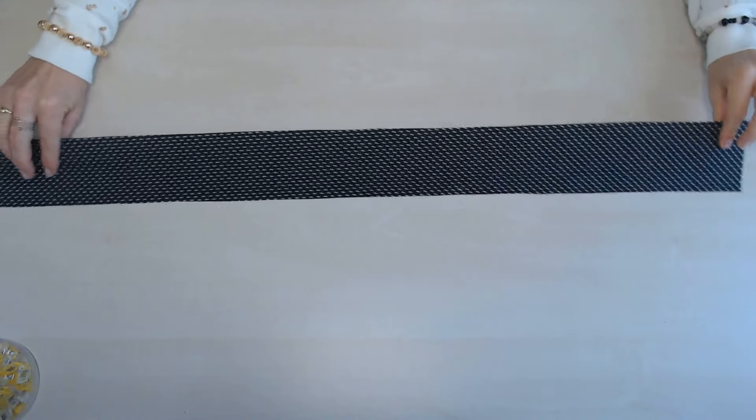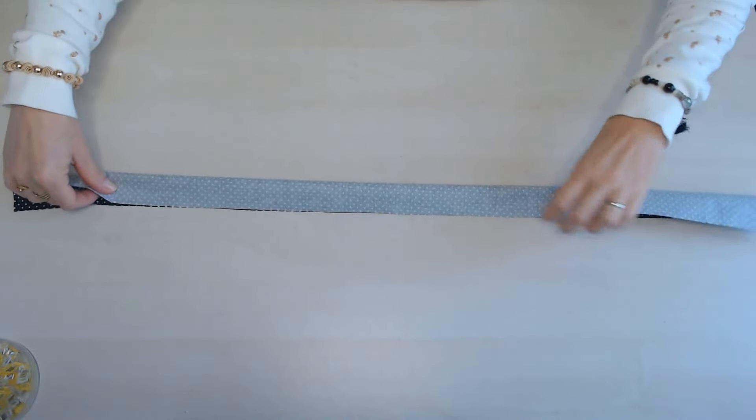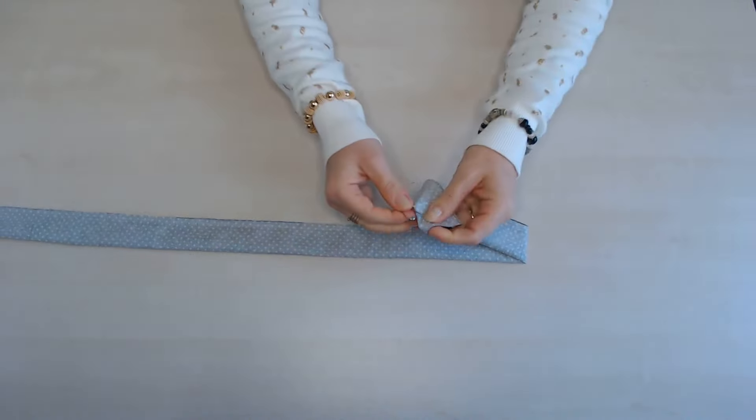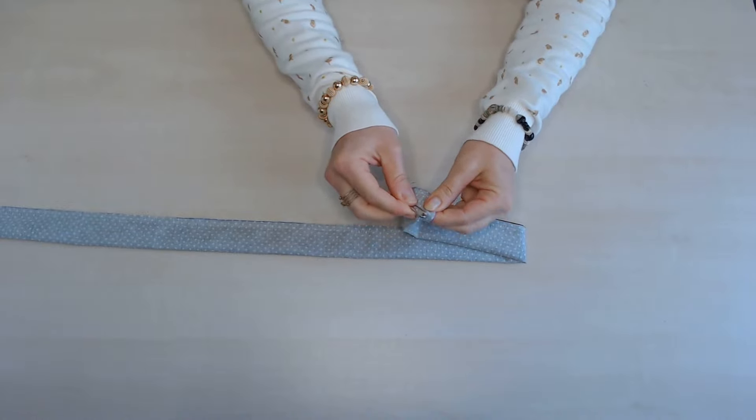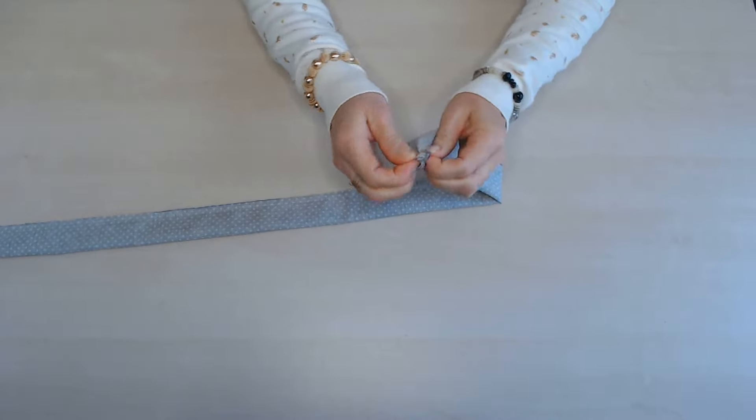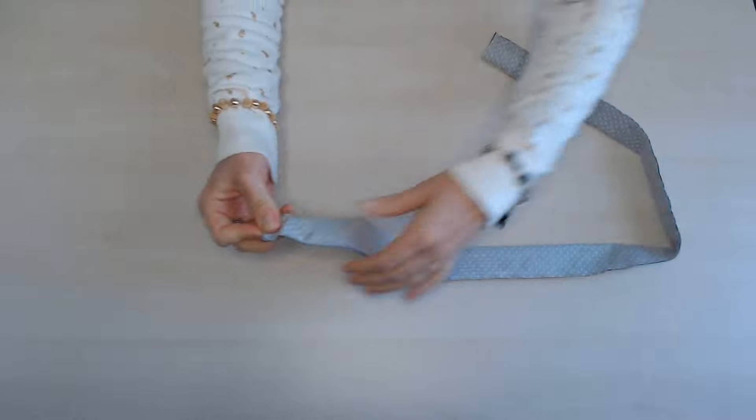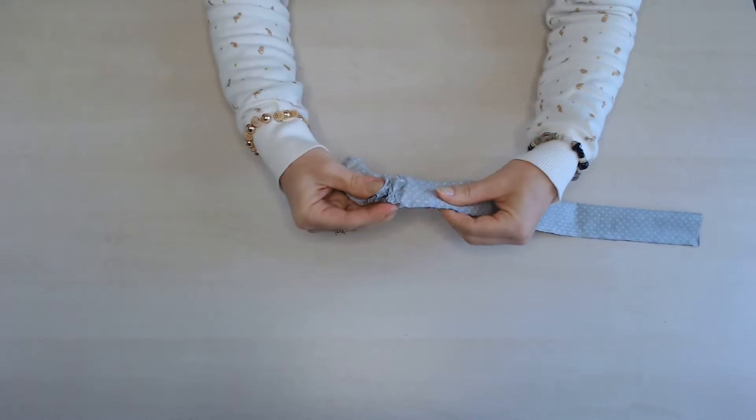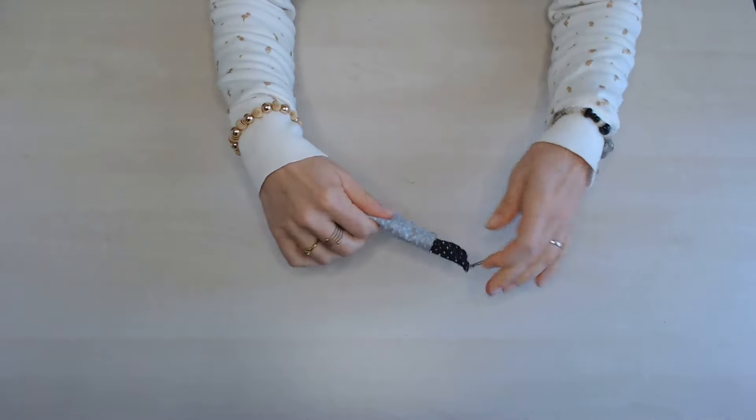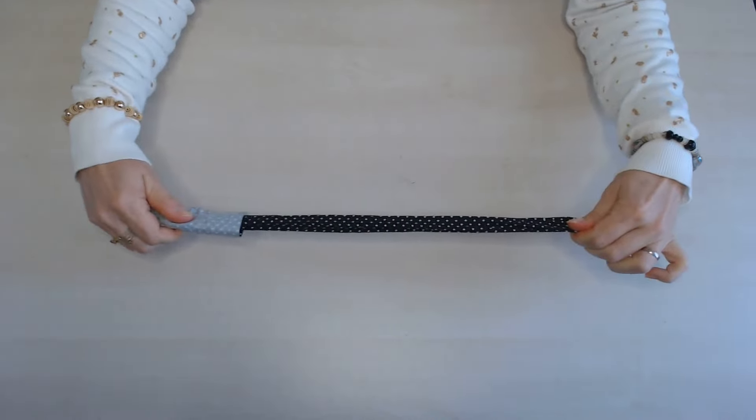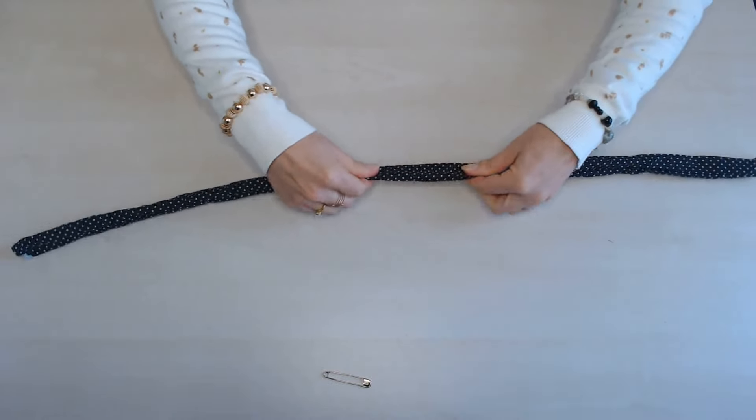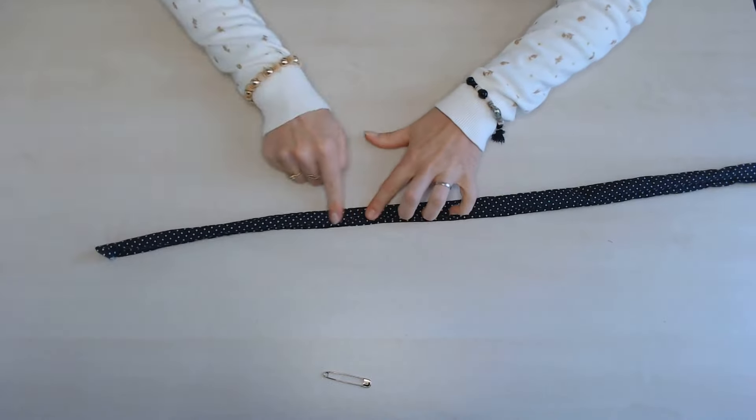Je reprends la bande de 86 cm, je la plie endroit contre endroit et je vais coudre sur toute la longueur à 5 mm du bord. Une fois piqué, on va retourner la bande à l'aide de l'épingle à nourrice. On va la mettre bien à plat et lui donner un petit coup de fer.